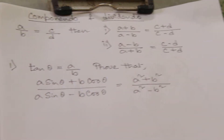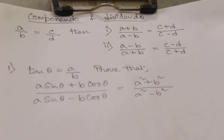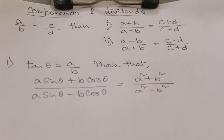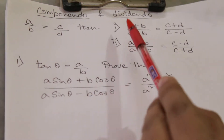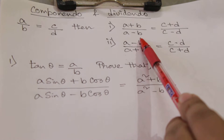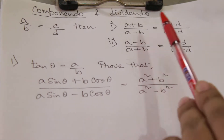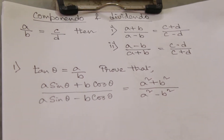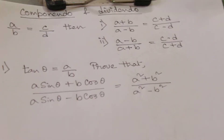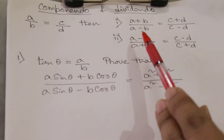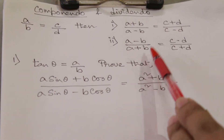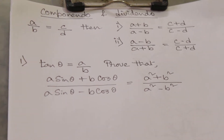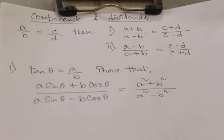If a/b = c/d, then using componendo and dividendo we can write: (a + b)/(a - b) = (c + d)/(c - d). And if we reciprocate it, it will become (a - b)/(a + b) = (c - d)/(c + d). This is the main formula.